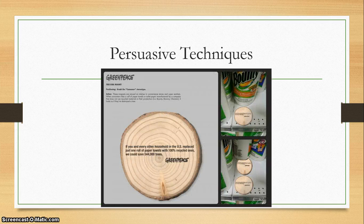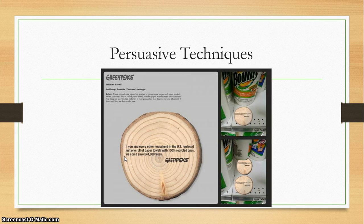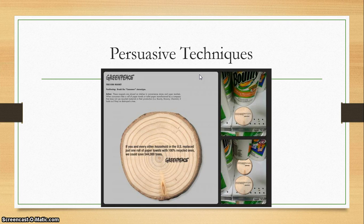The other thing you want to look at is persuasive techniques — how are they trying to convince you of something? In this case, the text is giving you a figure, giving you statistics: 'If you and every other household in the US replace just one roll of paper towels with 100% recycled ones, we could save 544,000 trees.' What's also really persuasive is they set these up on paper towel counters at the grocery store, and the paper towels fit perfectly over the circles on the display. So it becomes very personal — when a shopper picks up that roll of paper towels, he or she understands they're part of destroying trees. Both the logical statistic and the placement of the ad become part of its persuasive techniques.